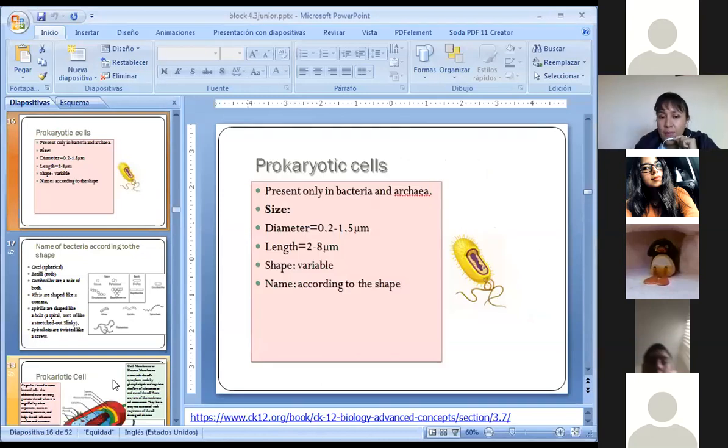So, now, we are going to see the prokaryotic cells. Prokaryotic cells, bacteria and archaea, as you already said. Size. We have a diameter that will go around here, 0.2 to 1.5 micrometers, and then the length, meaning from here to here, 2 to 8 micrometers. The shape will be variable, and according to the shape, we are going to name the bacteria. So, give me two examples of the bacteria according to the name. I am not asking for a specific name of the bacteria, but a general name. Cocci, Cocci Bacilli, yes. Bacilli, Cocci. Yes, Coccobacilli. Yes. Perfect. Vibrio, okay.